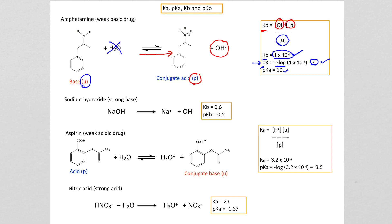pKA plus pKB equals 14, so if pKB is 4, then pKA is 10. For amphetamine, which is a weak base, the pKB is 4 and the KB is 1×10⁻⁴.